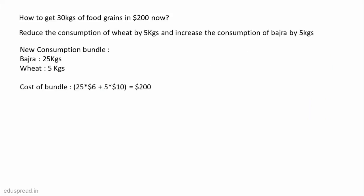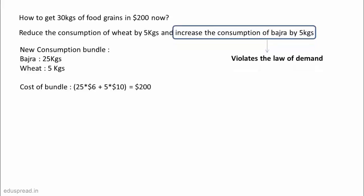To do this, they will have to reduce the consumption of wheat by 5 kgs and increase the consumption of Bajra by 5 kgs. This means, after the rise in price of Bajra, the household will start consuming 25 kgs of Bajra and 5 kgs of wheat to meet their minimum monthly consumption target, and this will cost them exactly $200. So, the quantity demanded of Bajra will increase from 20 kgs to 25 kgs despite the increase in its price. And this violates the Law of Demand.